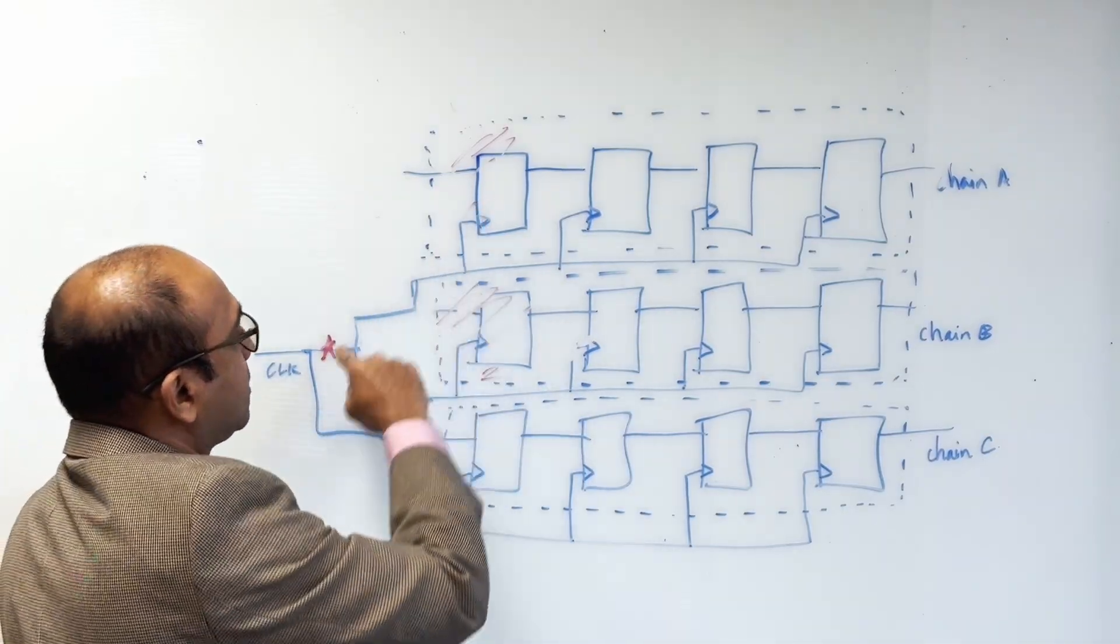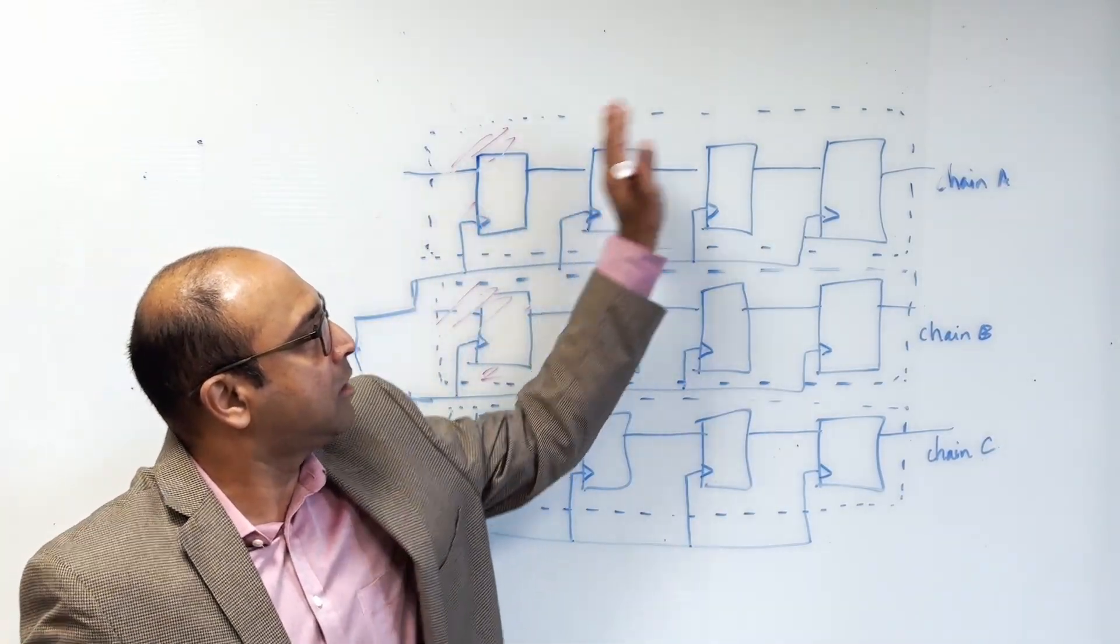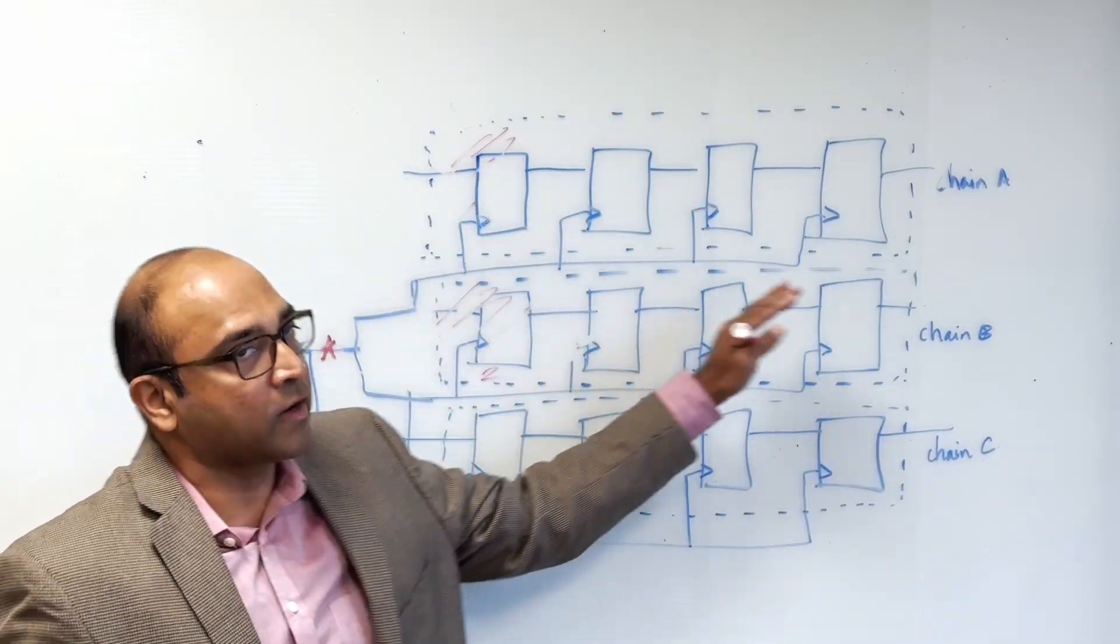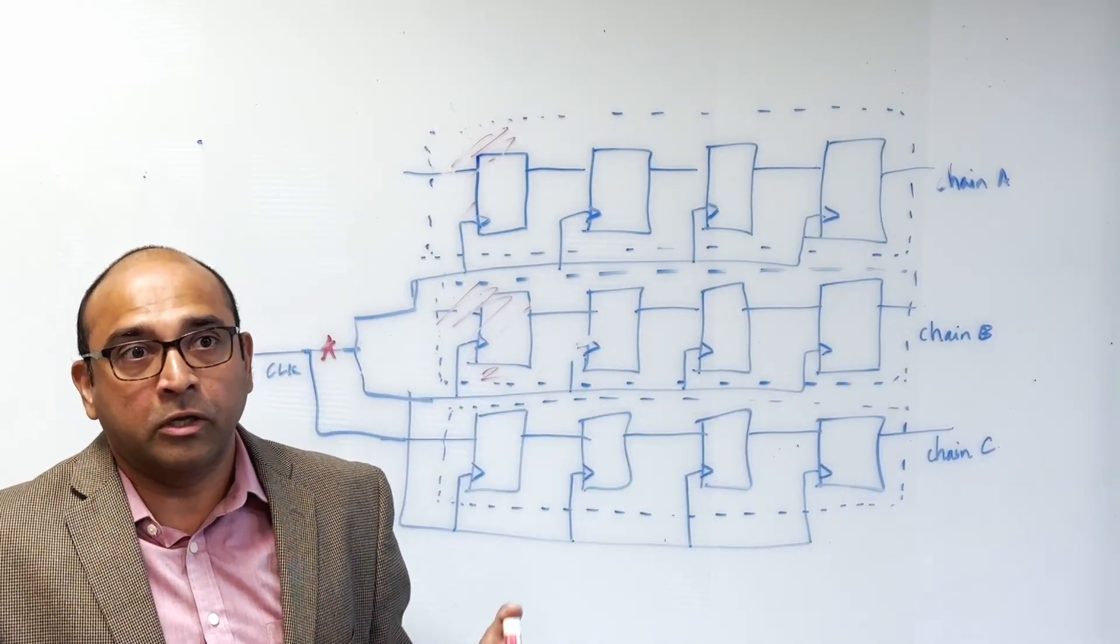Imagine if you had a defect here. In the past you would assume it's somewhere in scan chain A and a different defect in scan chain B causing both of them not to shift properly. So two different defects.